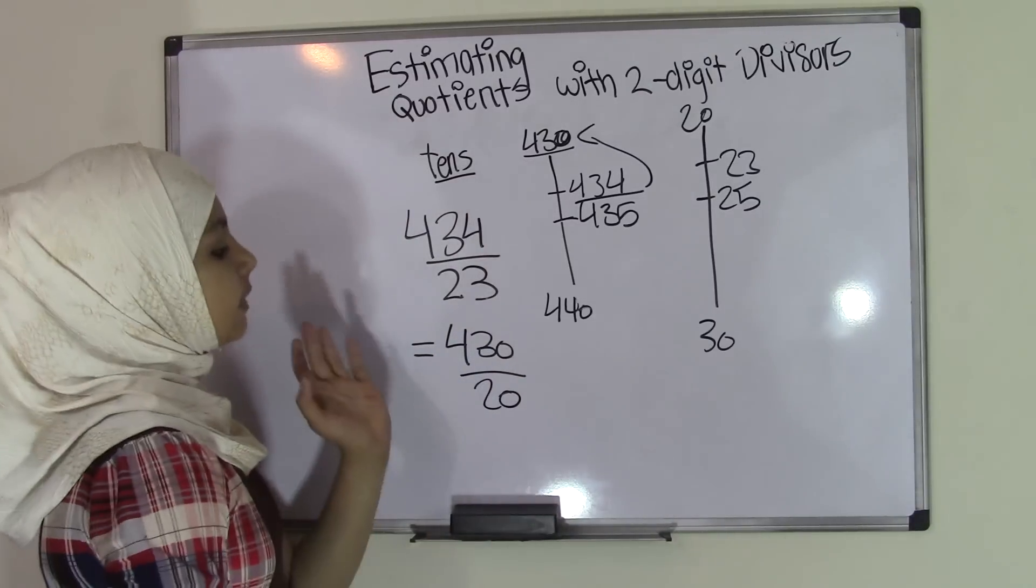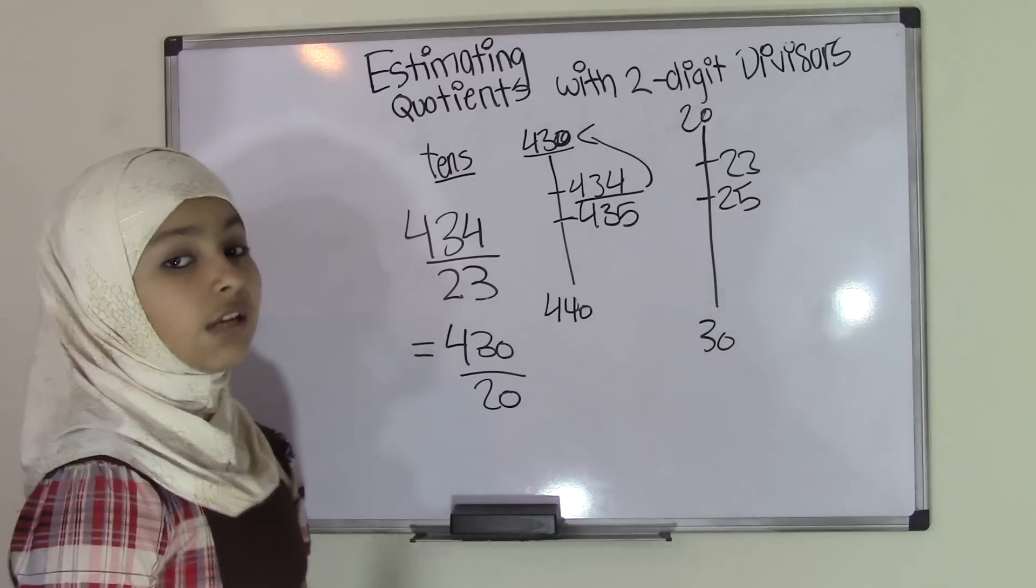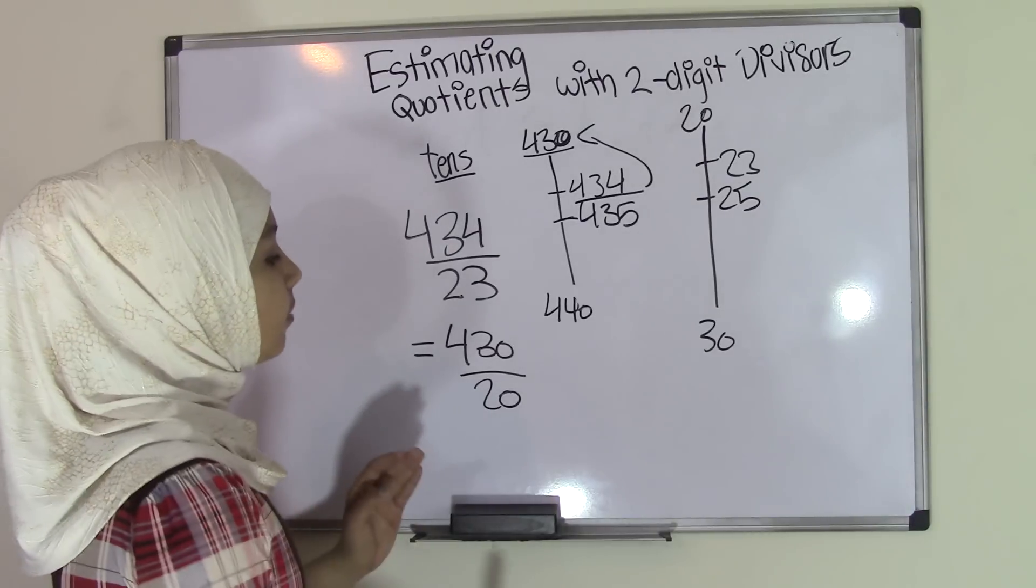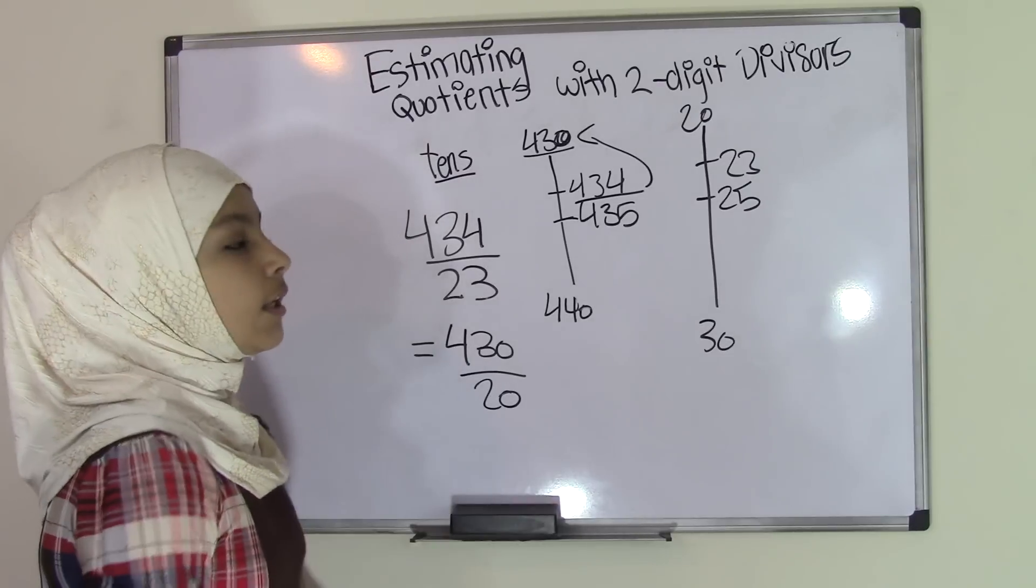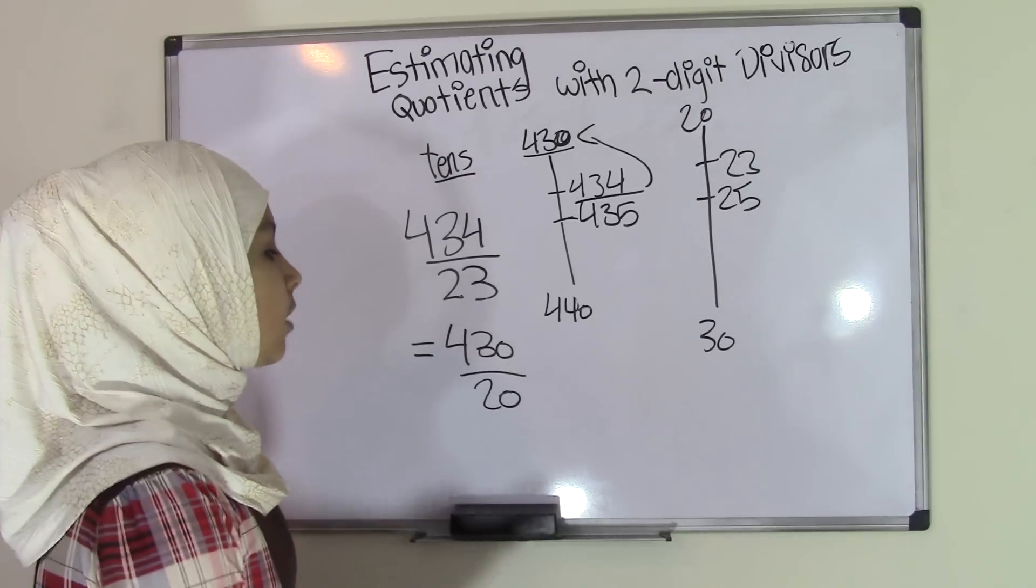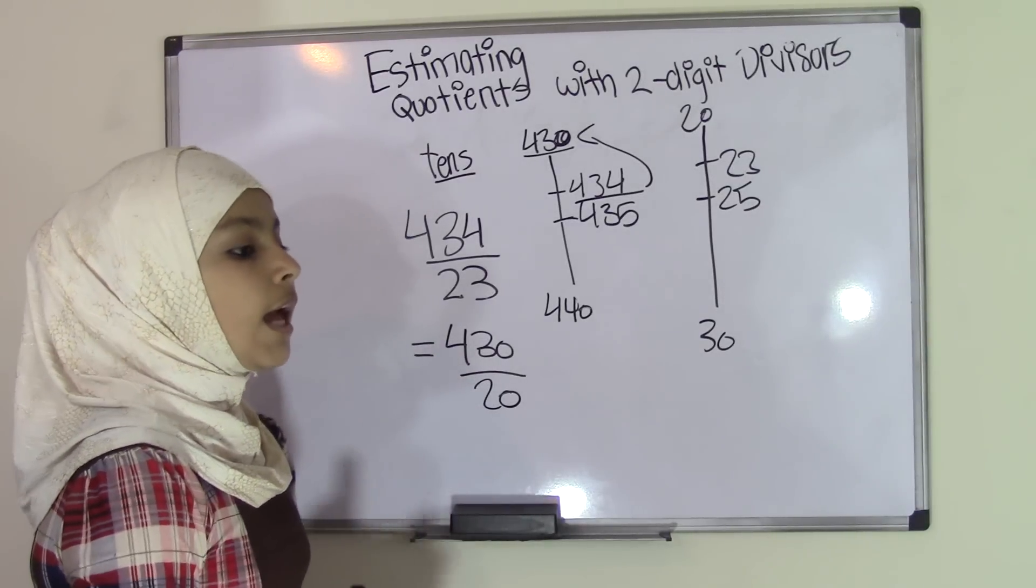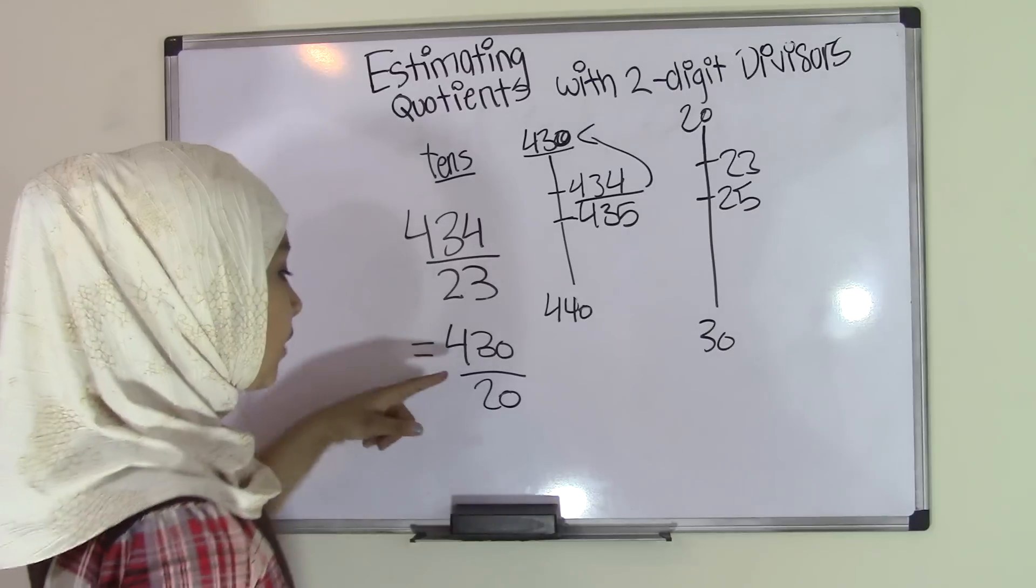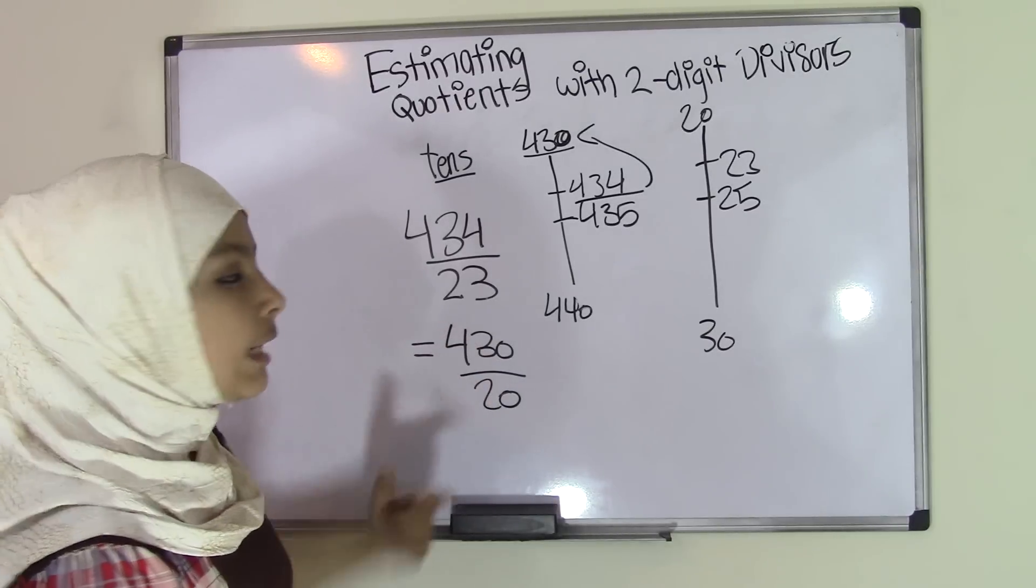Now this is our estimated problem. We're not done with our answer yet. So now all we do is simple division. In our previous videos, we talked about zeros in our problems and how to handle them. Now we can see that 430 has one zero and 20 has one zero.